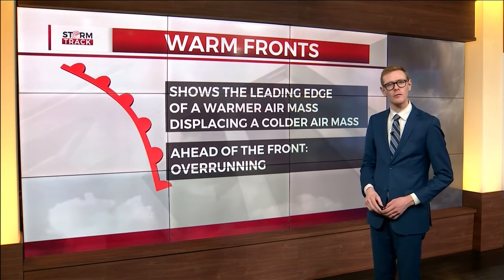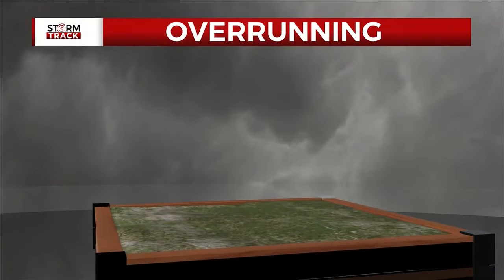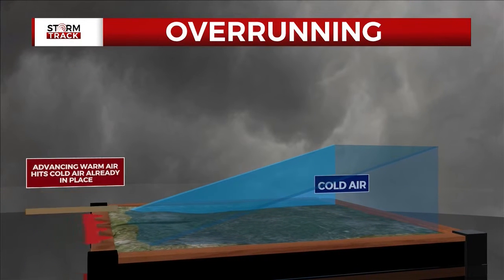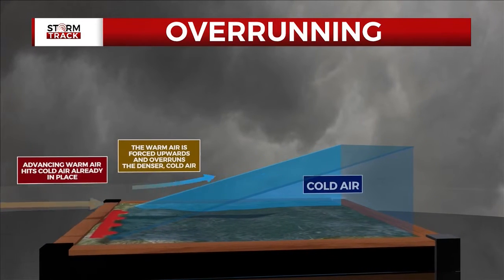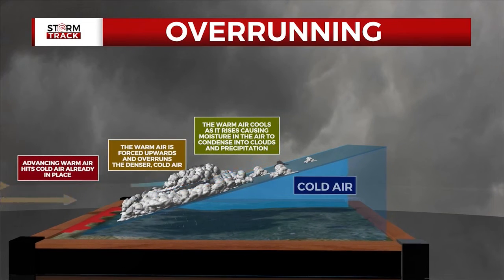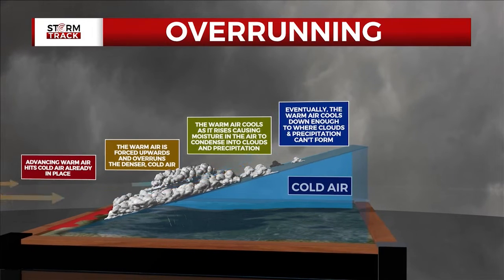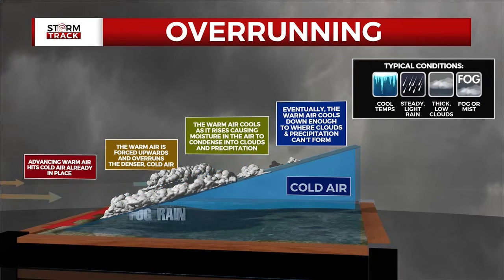Ahead of a warm front is where we often talk about something called overrunning. This is where advancing warm air hits cold air already in place. The warm air is forced upwards and overruns the denser cold air. The warm air cools as it rises, causing the moisture in the air to condense into clouds and precipitation. Eventually the warm air cools down enough to where clouds and precipitation can't form. This weather pattern typically brings steady, light rain, thick, low clouds, and fog or mist.